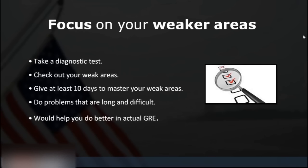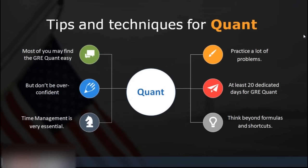Spend at least ten days mastering weak areas; take GRE-style topic tests on probability, ratios, etc. to see where you stand. If you don't know your weak areas, take a diagnostic test first. For days 30 to 40, focus on your stronger areas — geometry, algebra, arithmetic — to build confidence heading into the exam. The audience confirms they love geometry, algebra, and even permutation and combination.